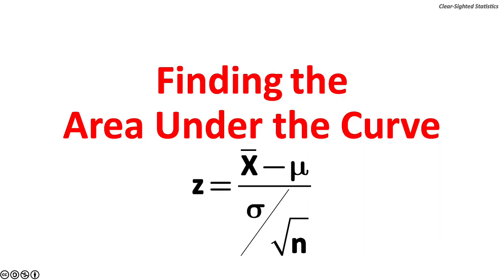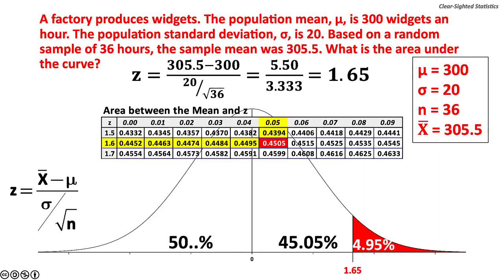Let's turn to finding the area under the curve. A factory produces widgets. The population mean, mu, is 300 widgets an hour. The population standard deviation, sigma, is 20. Based on a random sample of 36 hours, the sample mean is 305.5. What is the area under the curve?